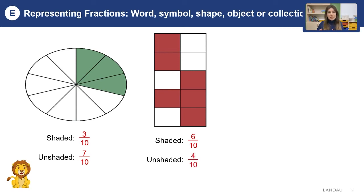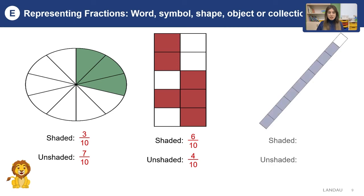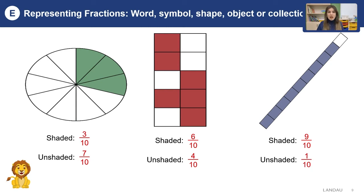Let's learn about the last shape. How many shaded parts can you see? There are just nine purple parts, so we can write it as nine over ten. What about the unshaded parts? That is just one over ten — one in the upper part and ten in the lower part.